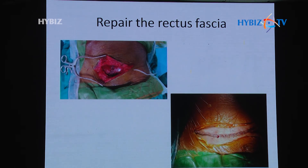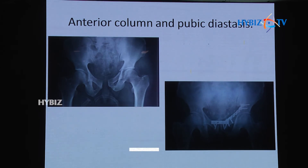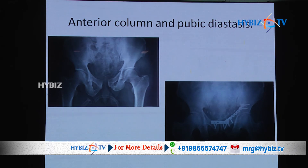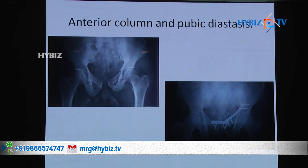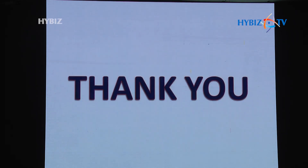Once the fracture is fixed, the linea alba is closed — since finger dissection is used, closure is straightforward. In contrast, the ilio-inguinal approach requires closing all three windows and carries a greater risk of hernia. In the case example shown, there is pubic symphysis diastasis and fracture of the quadrilateral plate — fixation of this type can only be achieved through Stopa's approach, as instrumentation is extremely difficult via the ilio-inguinal approach. A second case also demonstrates quadrilateral plate fixation achievable only through this approach.